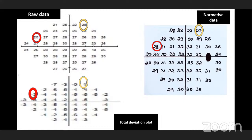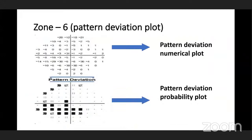Zone six is the pattern deviation plot, with two subtypes: pattern deviation numerical plot and pattern deviation probability plot. For example, if there are opacities such as cataract or high refractive errors, the retinal sensitivity will appear less — but this doesn't mean the patient truly has reduced retinal sensitivity. The pattern deviation plot filters this out and gives the original data.